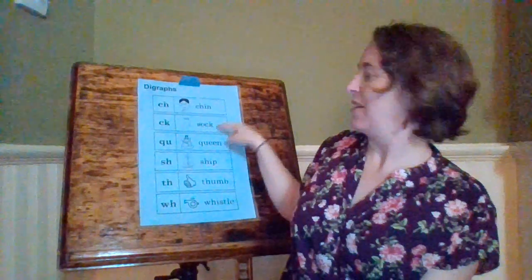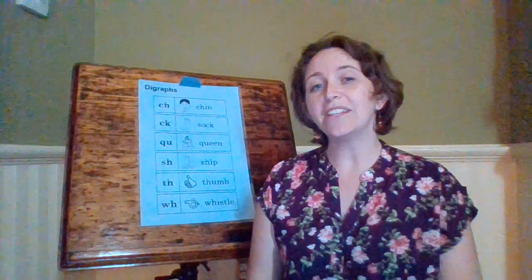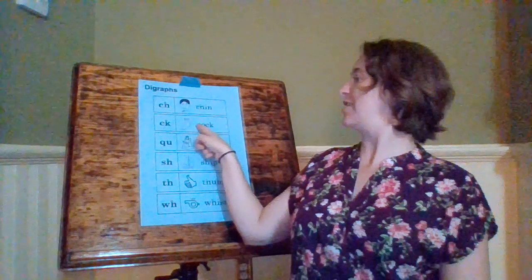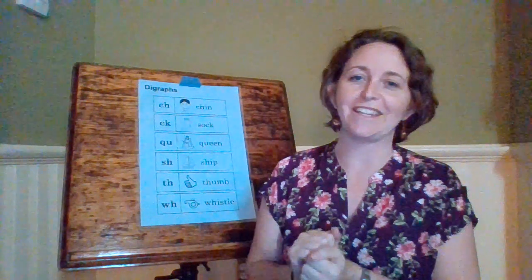Our next one, we're going to skip. Our CK doesn't get a dance move. It's not at the beginning of a word. We only use our CK at the end of a word. Our keyword is SOCK, and we hear that at the end. But we don't have a dance move. We only have dance moves for the ones that are at the beginning of a word.